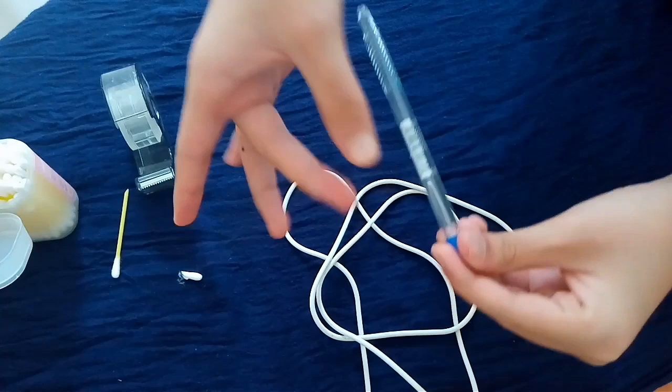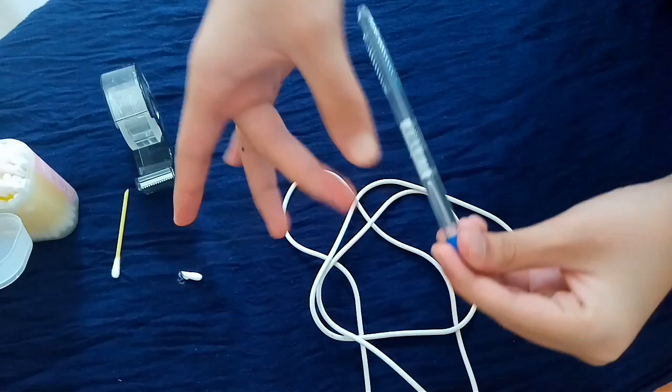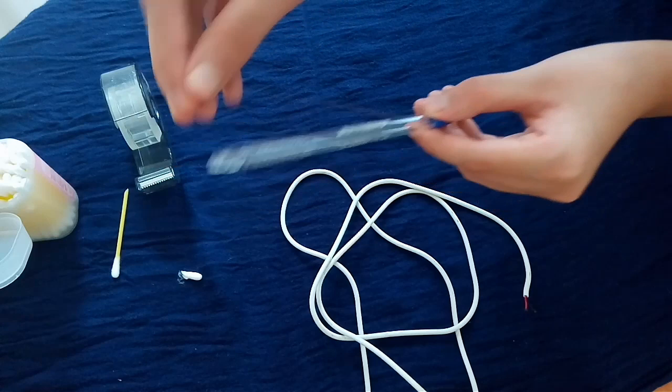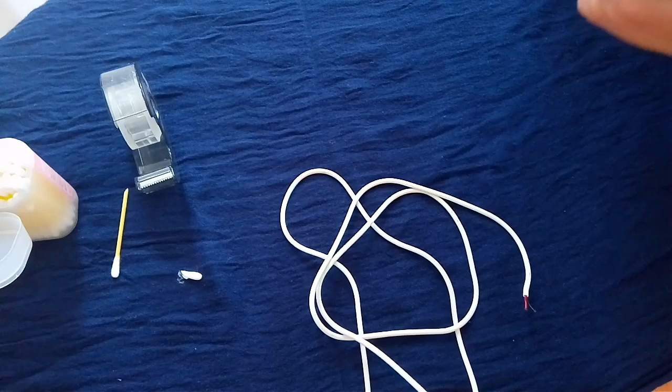After you have something that looks like this, as you can see, the copper wire is sticking out. Now, just straighten the copper wire and then bend it into the front hole. So you'll bend it, put it inside like that.